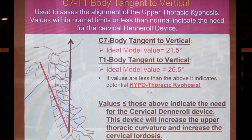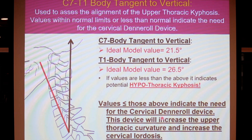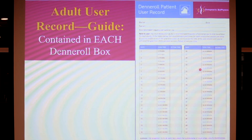Values less than 20 degrees indicate the need for the cervical dental roll. If values are more than 40 degrees, we're going to be very cautious and pretty much not use it. Each dental roll comes with a user guide.